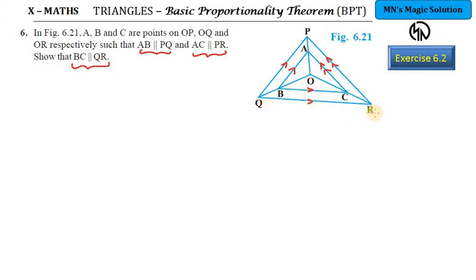By converse of BPT we need to prove OB by BQ equals OC by CR. Since AB is parallel to PQ, applying BPT gives OB by BQ equals OA by AP. Similarly, since AC is parallel to PR, applying BPT gives OC by CR equals OA by AP. So from statements 1 and 2, we get rid of the common ratio OA by AP and we are left with only OB by BQ equals OC by CR. By converse of BPT, therefore BC is parallel to QR.